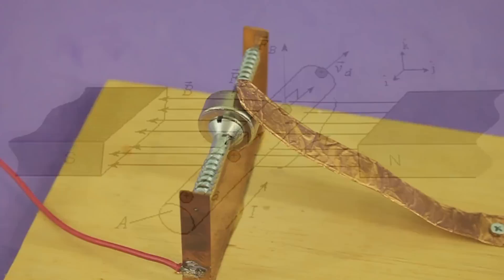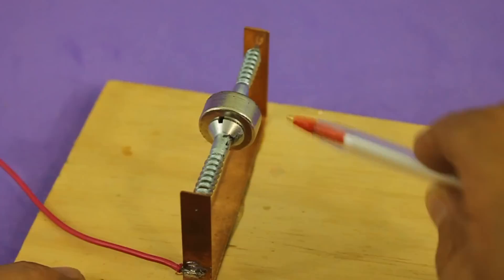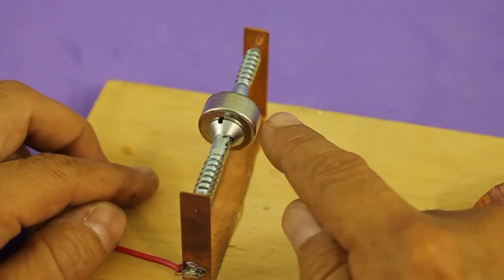In this motor the current flows through the copper tape. So we have the current in this direction and then the magnetic field is in this direction. Therefore we will have a force upwards or downwards depending on the sense of the current and magnetic field.